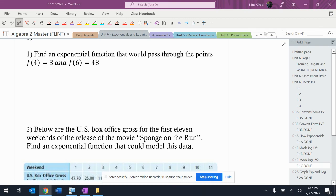Find an exponential function that would pass through the points f(4) = 3. We got over here that the number inside the parentheses is the x and the number outside the parentheses or after the equals is the y. So I'm getting (4, 3) and then (6, 48).